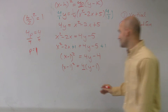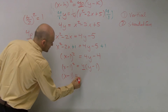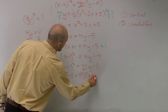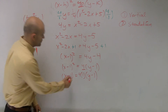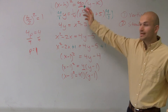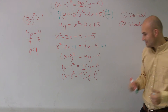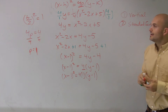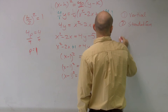So now my final form is x minus 1 squared equals 4 times 1 times y minus 1. Once I have everything in that standard form, I can now identify the vertex, focus, and directrix.